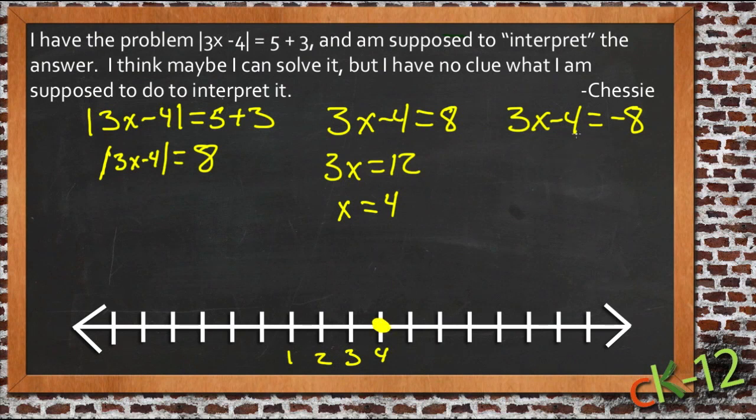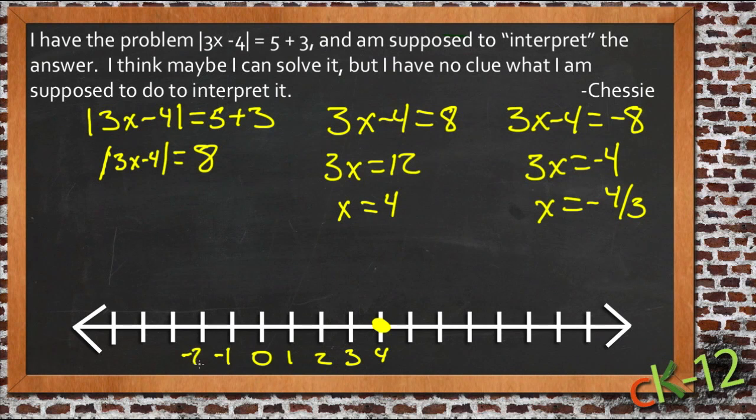And so then the other possibility is that it equaled negative 8. So we'll add 4 to both sides here, and we'll get 3x equals negative 4. Divide both sides by 3, and we get x equals negative 4 thirds. So now we're back. We had 0, and negative 1, and negative 2. So this is negative 1 and a third. So there's a point right about there.